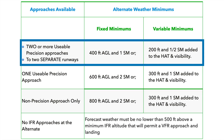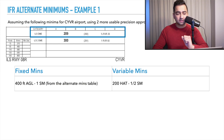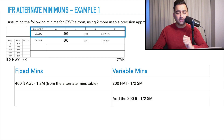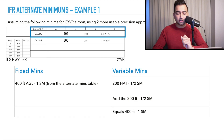Now let's go back and look at the alternate minimums chart. With two or more usable precision approaches to two separate runways, the fixed minimums are 400 feet AGL and one statute mile, and the variable minimums are 200 feet and a half added to the height above touchdown zone and the visibility. So our fixed minimums are 400 feet AGL and one statute mile, and the variable minimums are 200 feet height above touchdown zone and a half statute mile. Adding the 200 feet and half mile from the minimums box equals 400 feet and one statute mile.